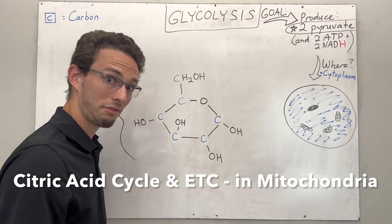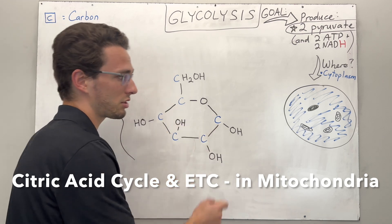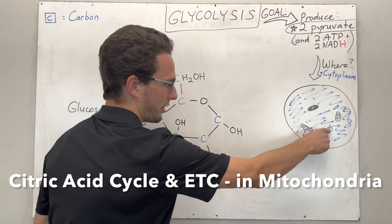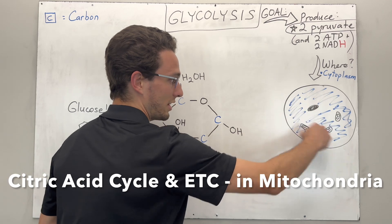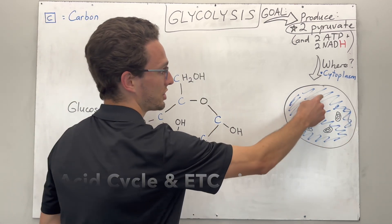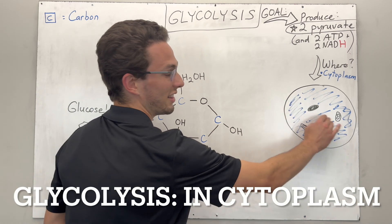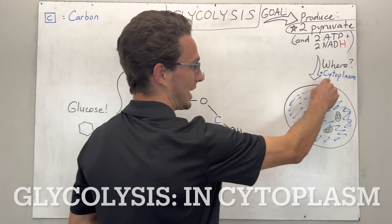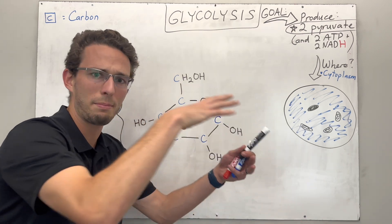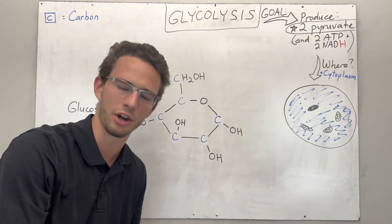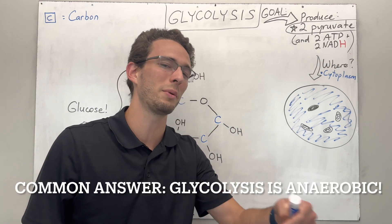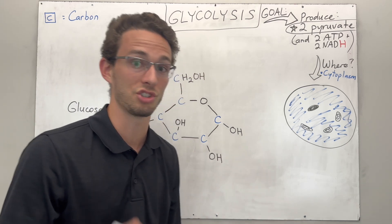Now where is this occurring? This is different because in the last two videos I talked about how we're making energy — ATP and other things — in the mitochondria, in the cell's organelles. But in this case glycolysis actually occurs in the fluid within the cell, literally called the cytoplasm, which translates to 'cell fluid.' And if a teacher asks, it is anaerobic — this process does not require any oxygen.